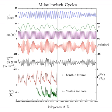Axial precession is the trend in the direction of the Earth's axis of rotation relative to the fixed stars, with a period of 25,771.5 years.